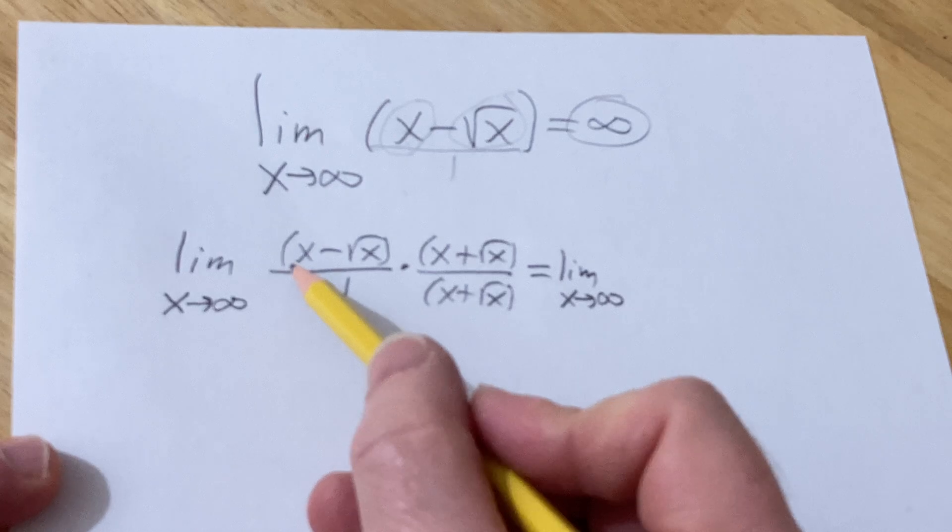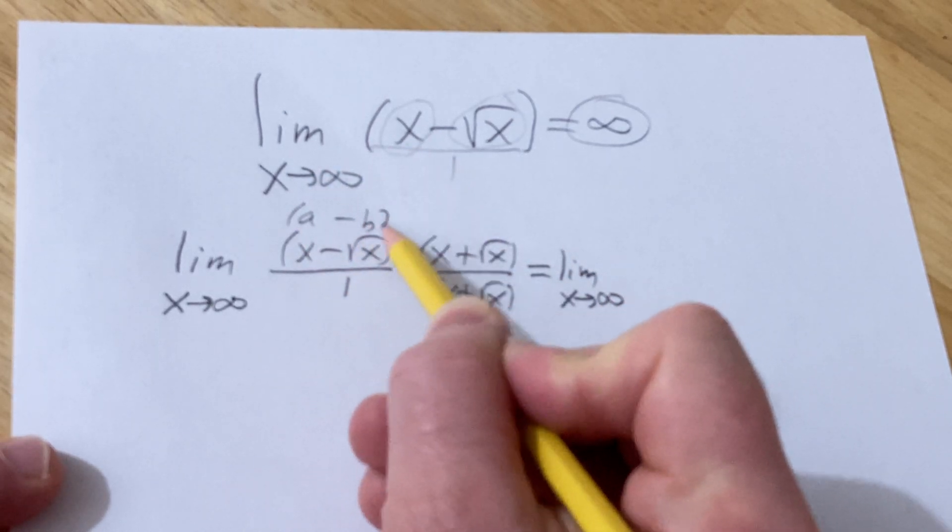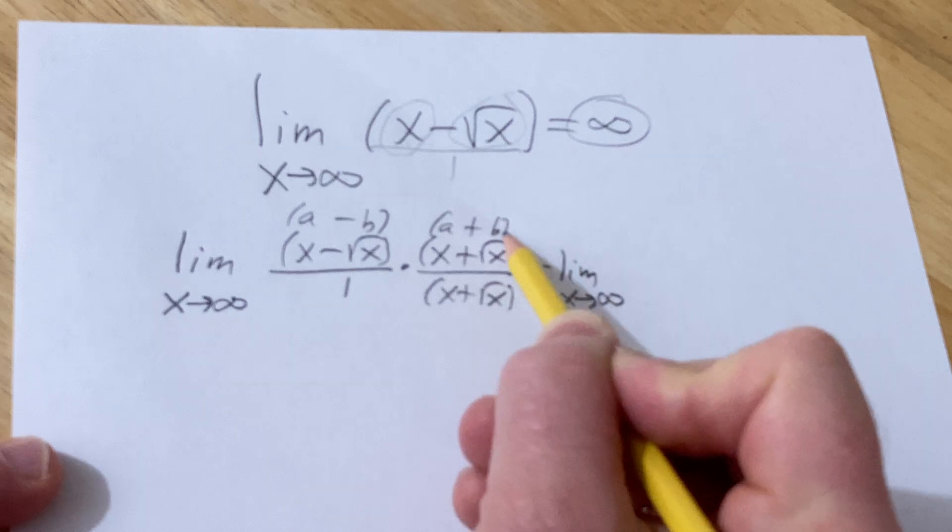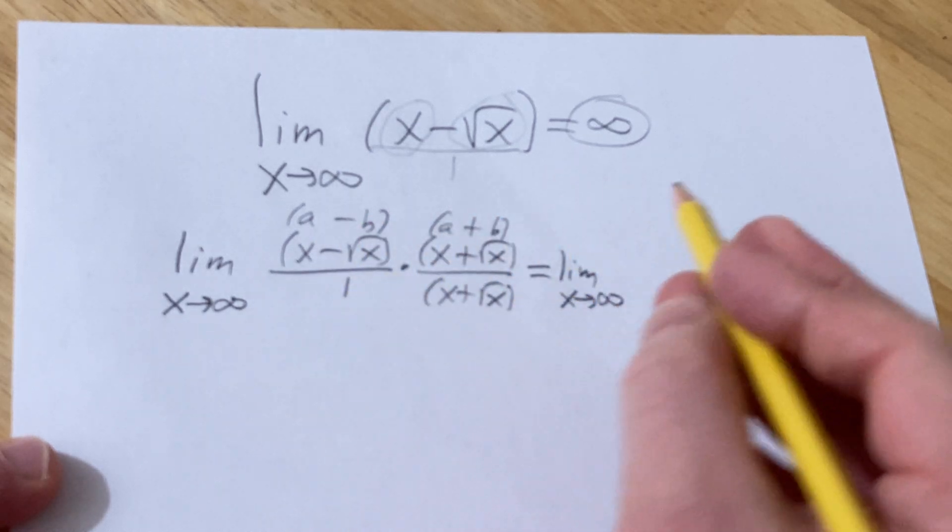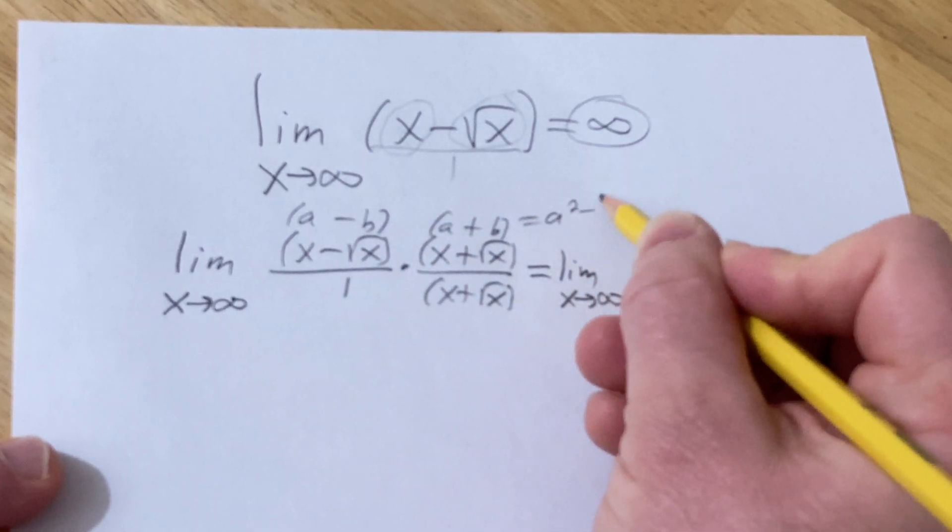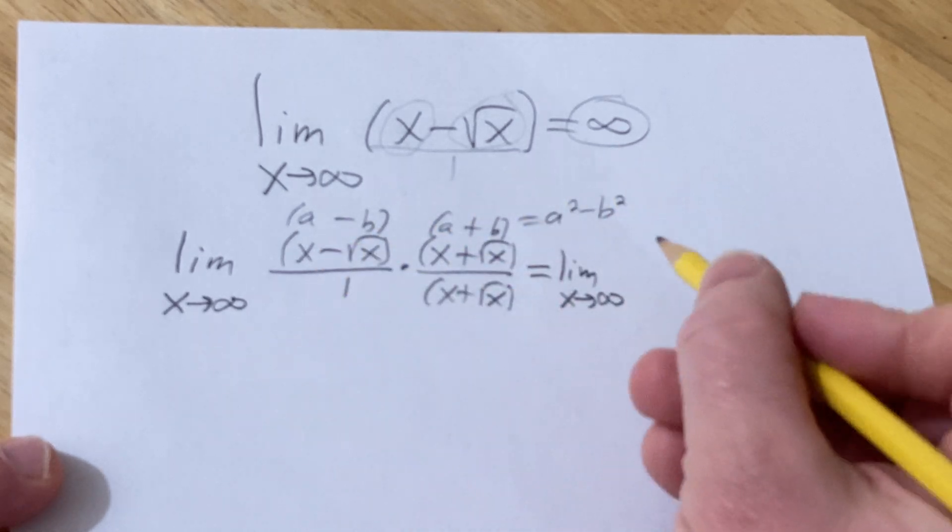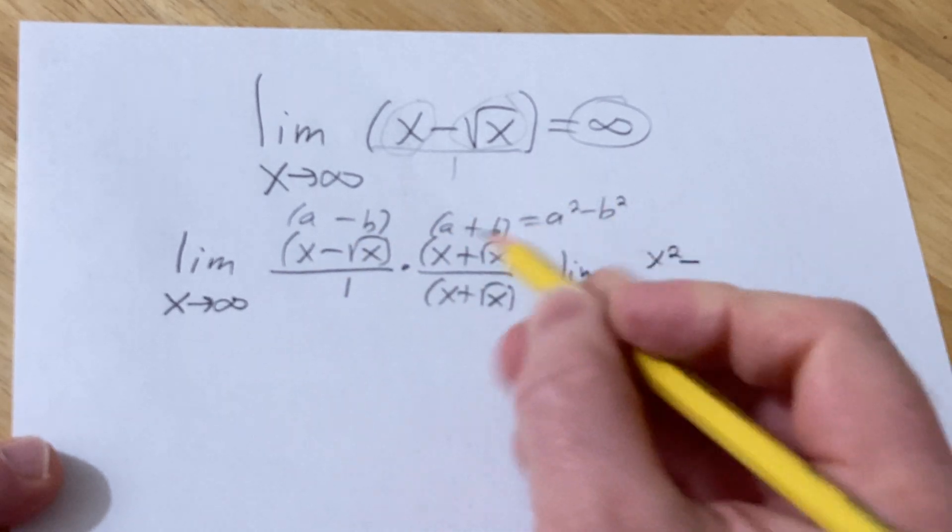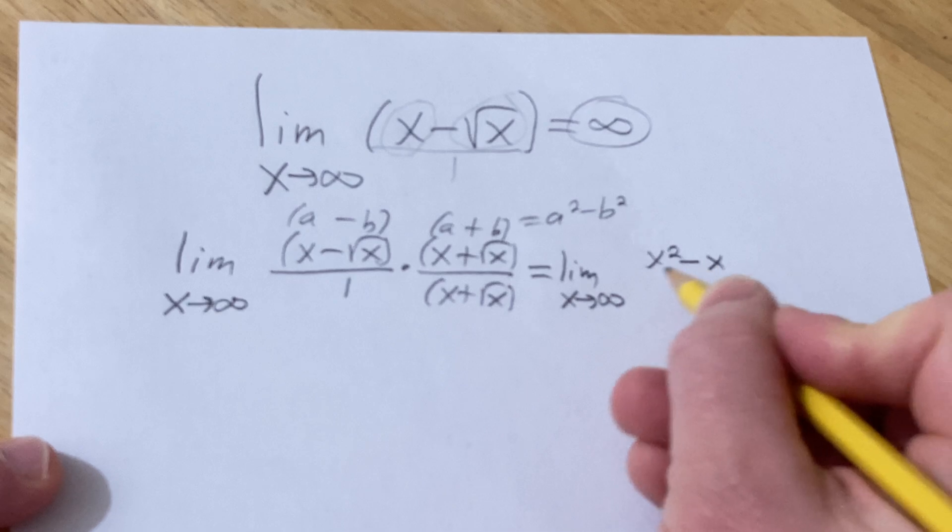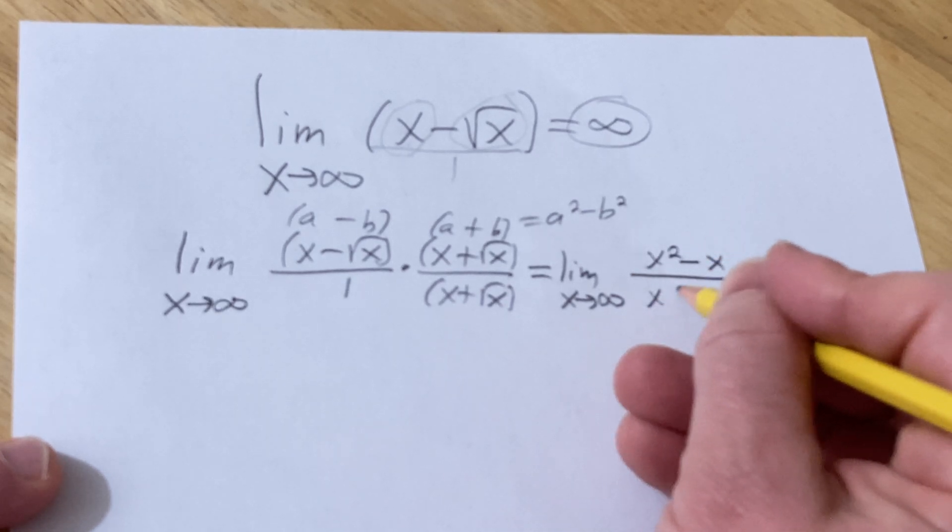So now we can use the difference of squares formula, right? This is a minus b, a plus b, which is a squared minus b squared. This is a squared minus b squared. So it'll be x squared minus the square root of x squared, which is just x, over x plus the square root of x.